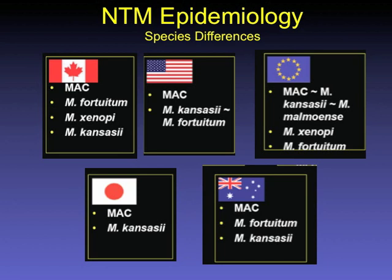There are a lot of species differences with NTM based on where you come from. In Canada, you might see less kansasii but more xenopei or fortuitum, and less malmoensi. Here in the United States, you can see fortuitum, MAC, and a lot of abscessus, but not as much xenopei. Australia and Japan also have their own individual species that tend to be more common. Where you're located makes a big geographic difference.